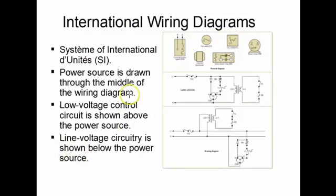And you can see that they're a little bit different than the ladder schematics and the pictorial diagrams that we just talked about. The one thing that you'll see is that the power source is drawn through the middle, always through the middle of the diagram. And the low voltage side in control wiring is on the top. The line voltage side or the high voltage side is always shown on the bottom of the power source.